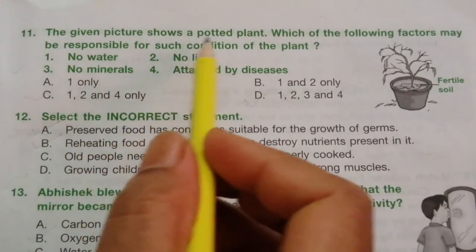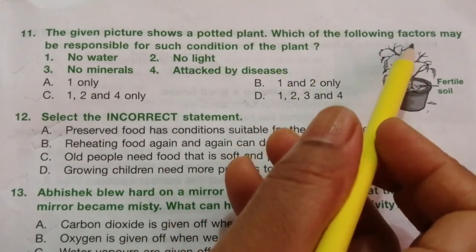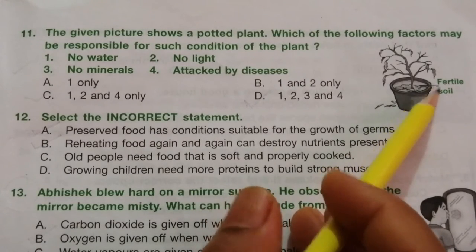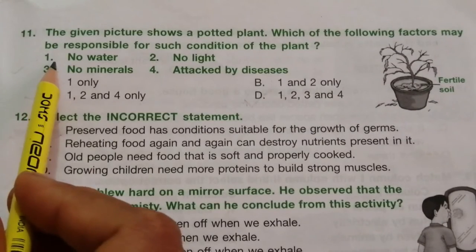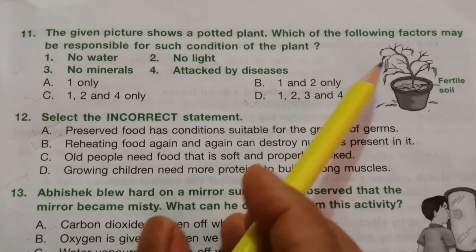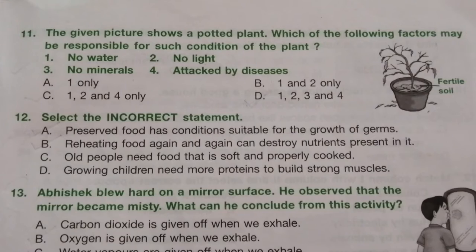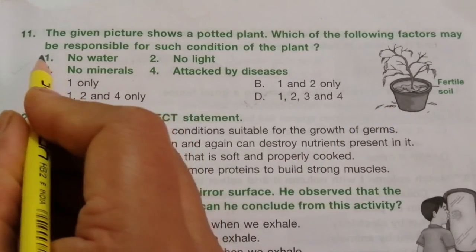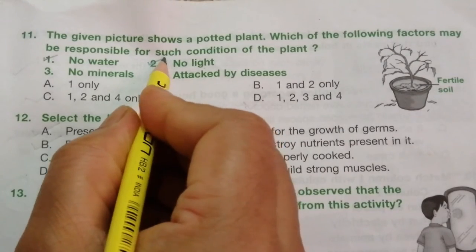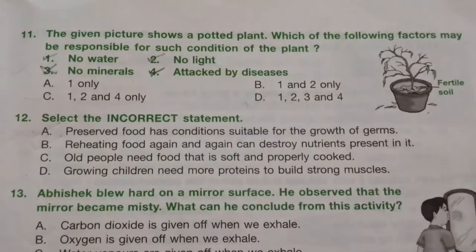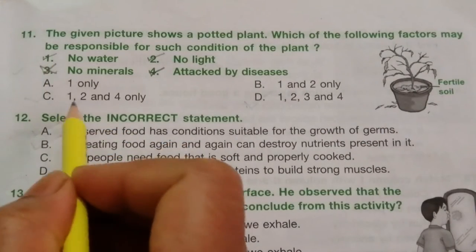Question 11: the given picture shows a potted plant in a certain condition. Which factors may be responsible? The options are no water, no light, no minerals, and attacked by diseases. They have given fertile soil, so minerals are present. The factors are no water, no light, and attacked by diseases — options 1, 2, and 4 only. The answer is C.